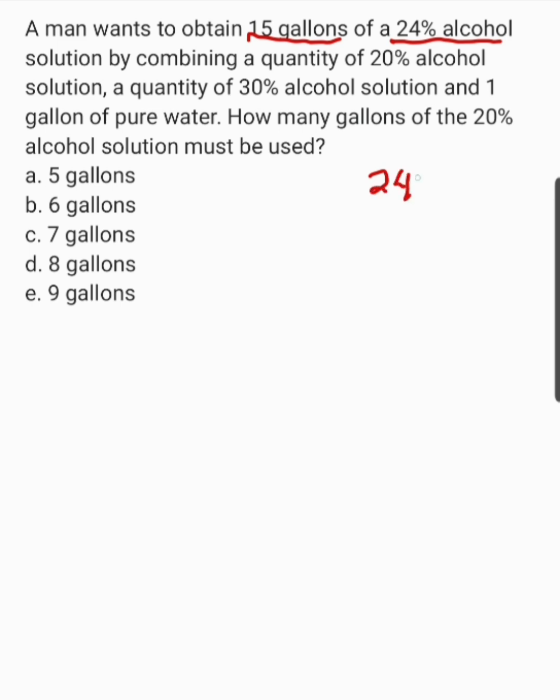So, 24% of 15, yan yung total. Ito yung 24% of alcohol, ito naman yung total mixture. A quantity of 20% alcohol solution. Let A para sa number of gallons dito sa 20% alcohol solution. Let B para sa number of gallons dito sa 30% alcohol solution. Now, kung i-add natin yan, this is equal to 24% of a total mixture of 15 gallons.